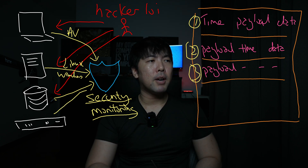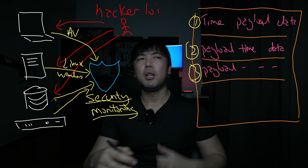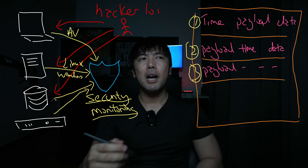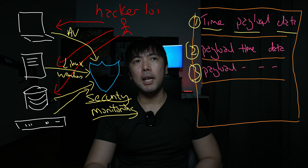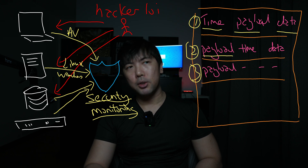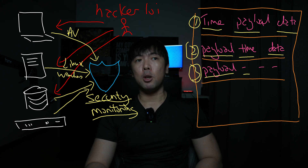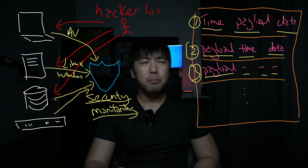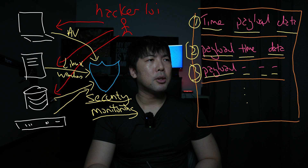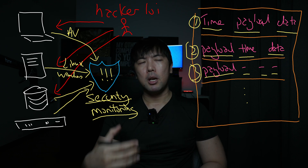Network devices are the same — many different providers, vendors, and log formats. On the right, we see different format examples: some start with time, then payload, then data; some start with payload first, then time, then data; and some have just payload with no other data. As these logs are sent into the security monitoring system so you can get alerts about bad actors trying to attack you, there is a lot of heavy lifting involved.